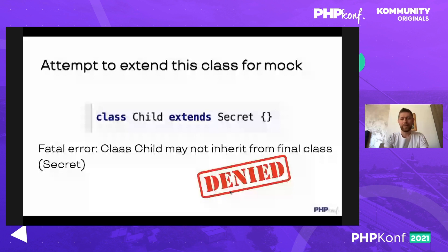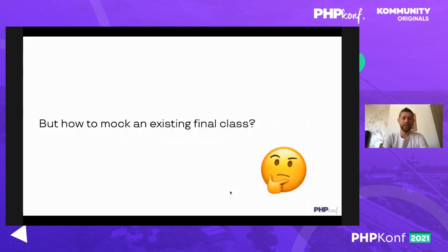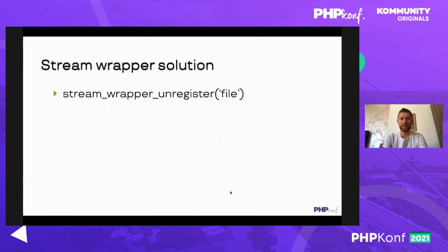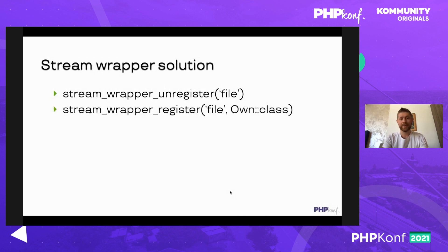We cannot mock a final class; we cannot extend it. What if we really want to create a stub — how can we do it? Let's start by looking for our escapes. The first escape is to use a file stream wrapper. As you know, PHP has some low-level features that give us access to file operations. When including a file or reading it, there is a special purpose called 'file,' and we can temporarily register a custom file handler.